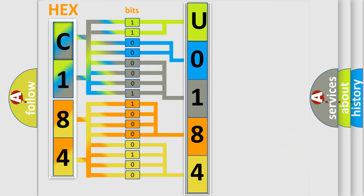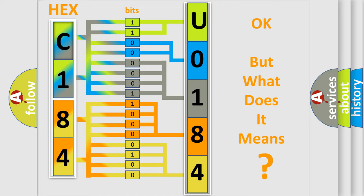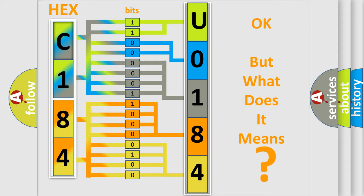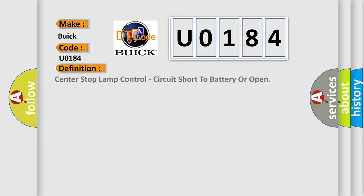We now know in what way the diagnostic tool translates the received information into a more comprehensible format. The number itself does not make sense to us if we cannot assign information about what it actually expresses. So, what does the diagnostic trouble code U0184 interpret specifically for Buick car manufacturers? The basic definition is: Center stop lamp control circuit short to battery or open.